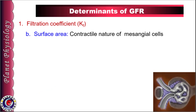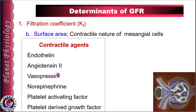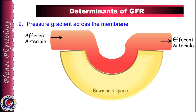The second factor determining filtration coefficient is the surface area available for filtration, regulated by mesangial cells. Contraction of mesangial cells reduces the area available for filtration and hence decreases GFR. Factors causing contraction include endothelins, angiotensin II, vasopressin, norepinephrine, platelet activating factor, and platelet derived growth factor. Whereas atrial natriuretic peptide, dopamine, prostaglandin E2, and cyclic AMP cause relaxation of mesangial cells, increasing the surface area and hence GFR.